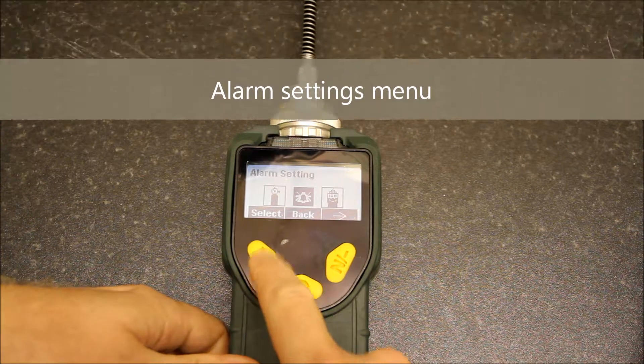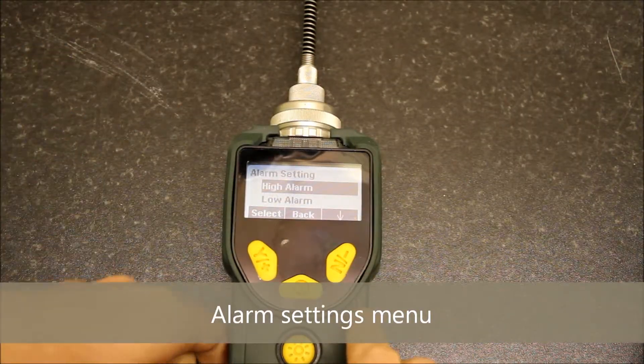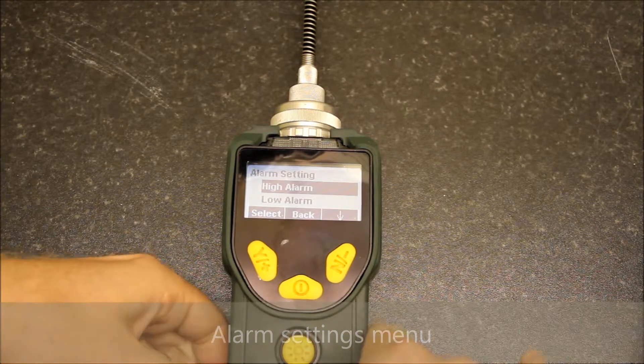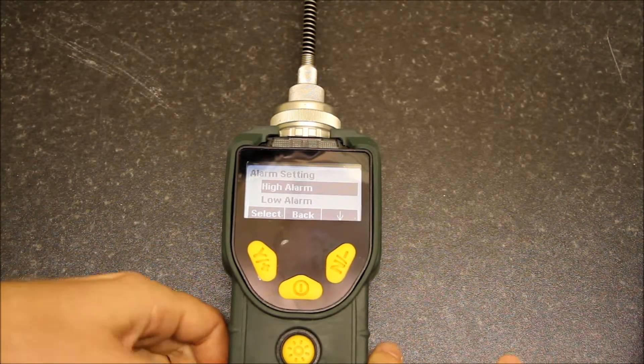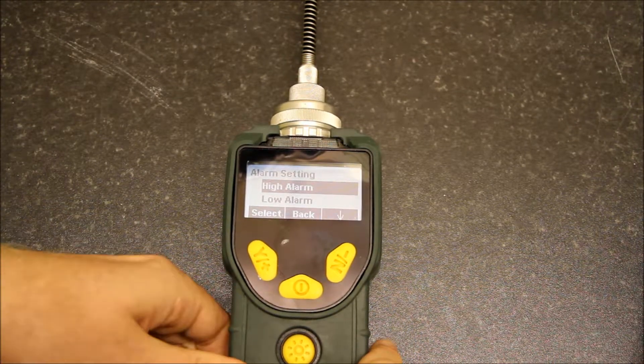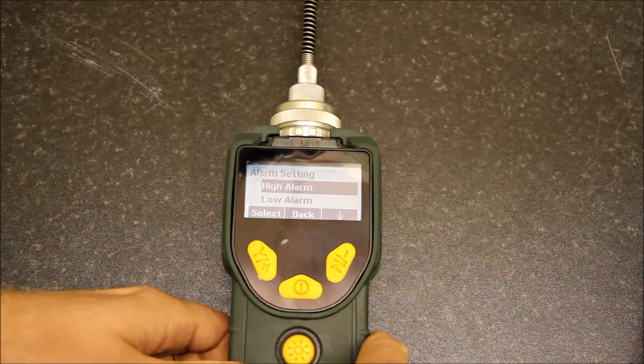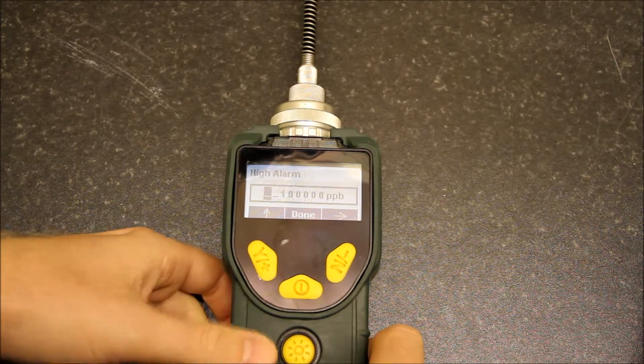If we go to the alarm settings and press yes, we can now change alarm values here. This is useful for headspace analysis for the environmental sector because you don't want alarms going off constantly. If we press select for high alarm, you can see readings are displayed in ppb but this is set at 100 ppm.